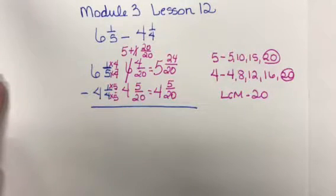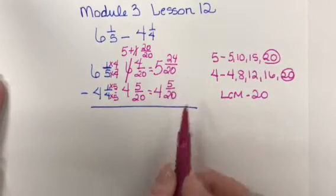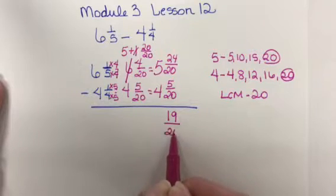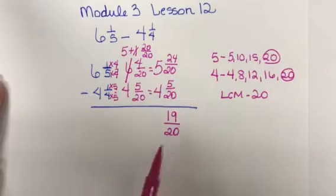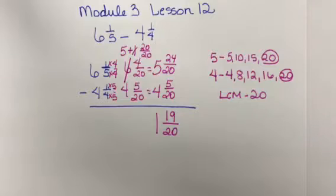Now, I can perform the subtraction because I can take 5 from 24, which would give me 19. My denominator is 20. And I can subtract 4 from 5, and I will get 1. So for our problem, 6 and 1 fifth minus 4 and 1 fourth, the answer is 1 and 19 twentieths.